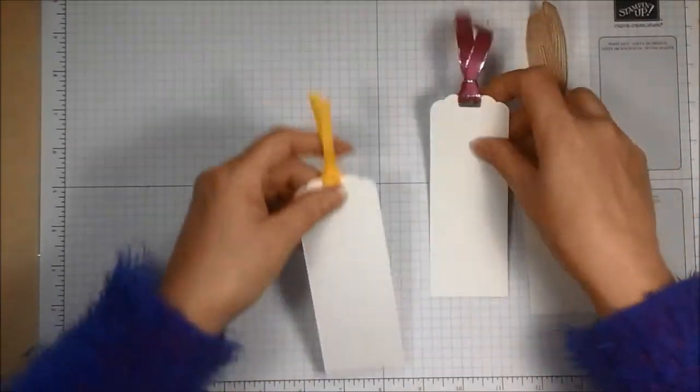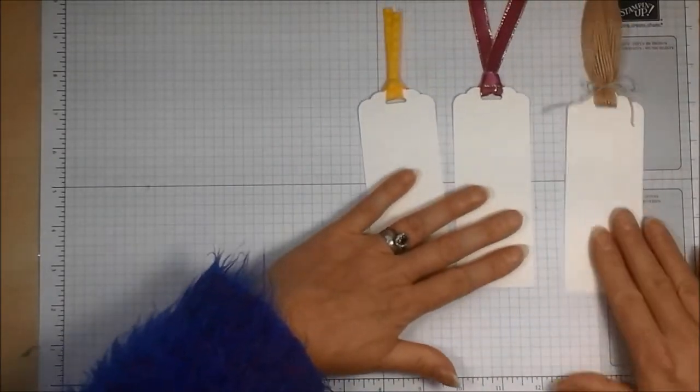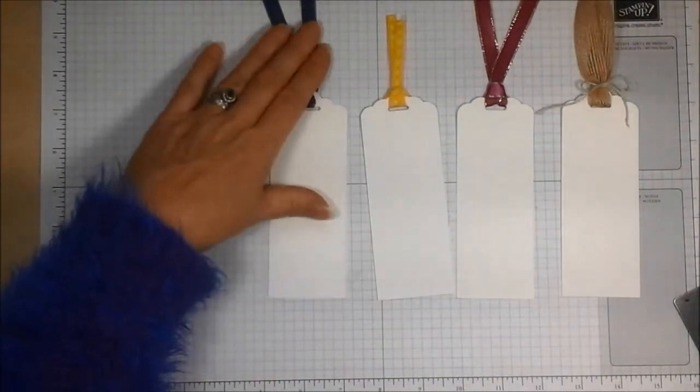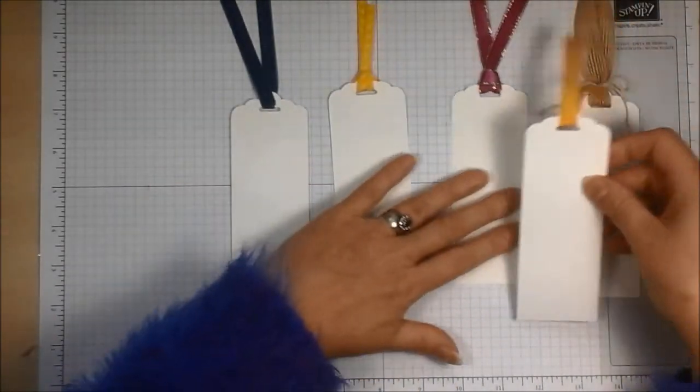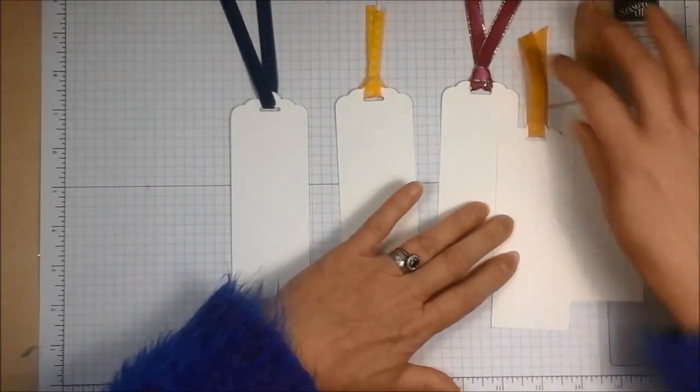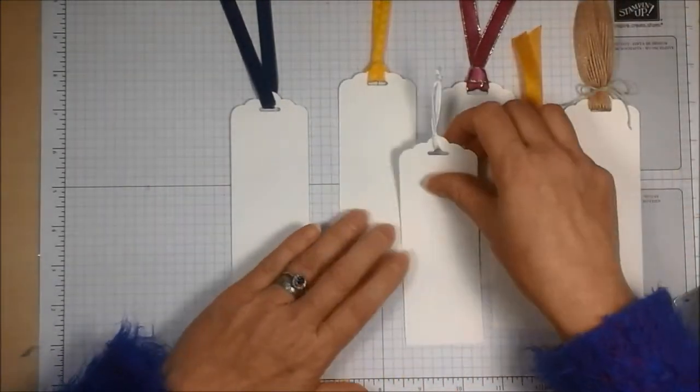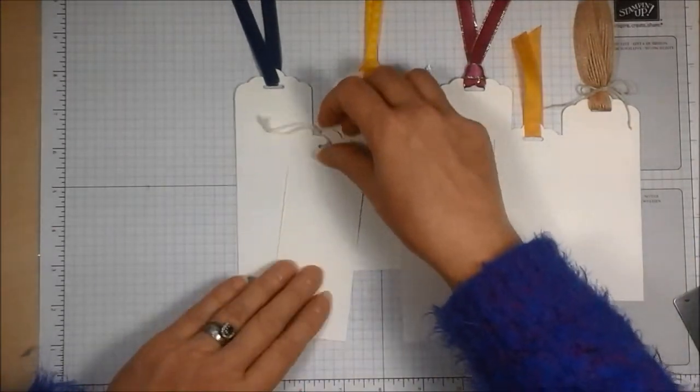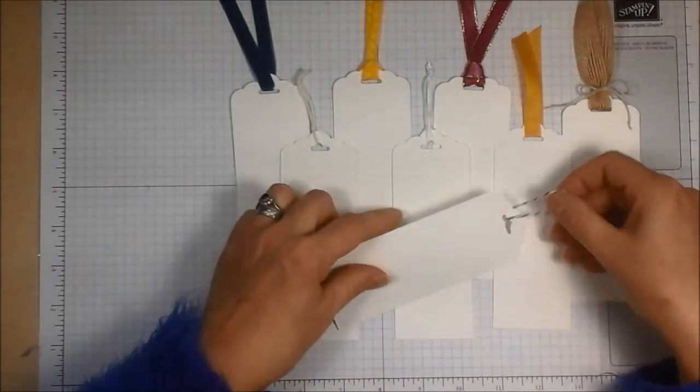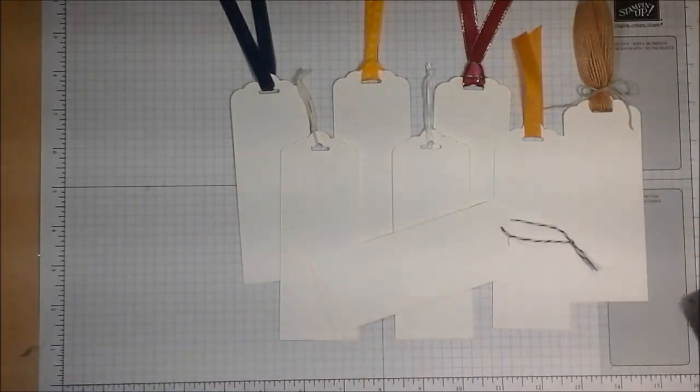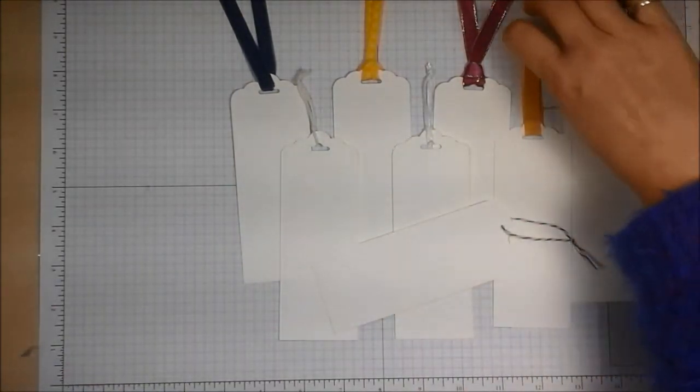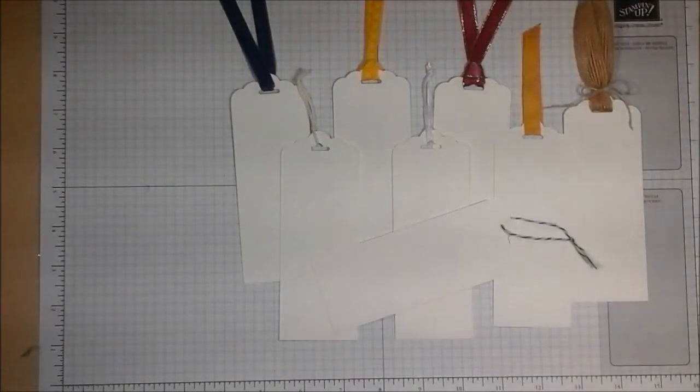So there you have it. There are lots of different options for tying ribbons and threads on the top of your gift tags or on the top of your bookmarks. And each one can solve a particular purpose. I hope that's been useful. I'm sure there are lots of other ways to attach your ribbons, but that's a few ideas for you today.